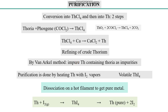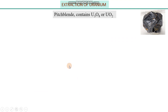Welcome back students. We were discussing purification of actinides. Last time we discussed how to purify thorium: thorium was obtained as an oxidized species called thuria, which was converted into a volatile species by passing iodine vapors through it at high temperature. This volatile compound was then passed through a hot filament, causing it to decompose, and iodine vapors and thorium in pure form were obtained. Today we move toward extraction of uranium.